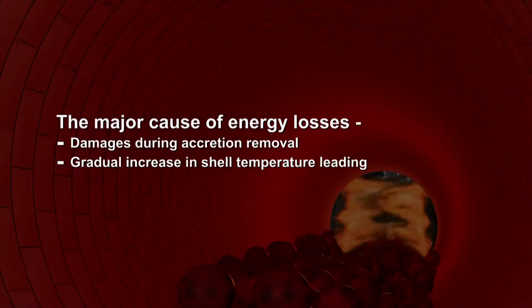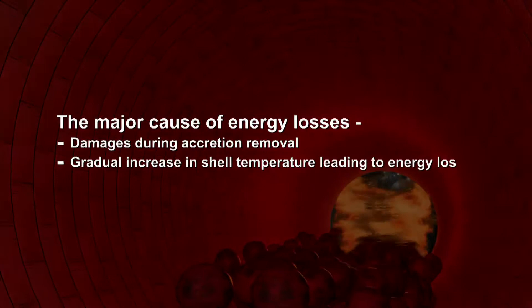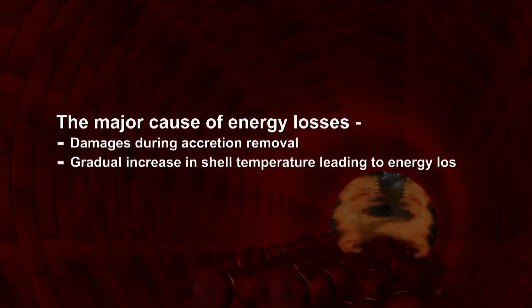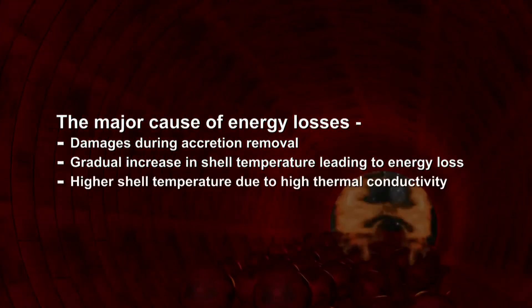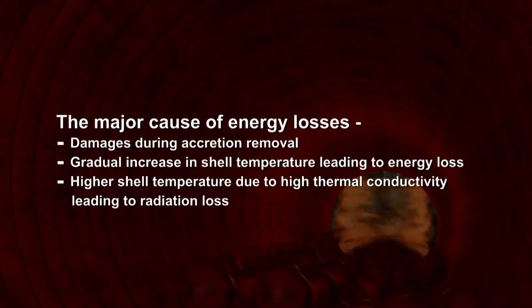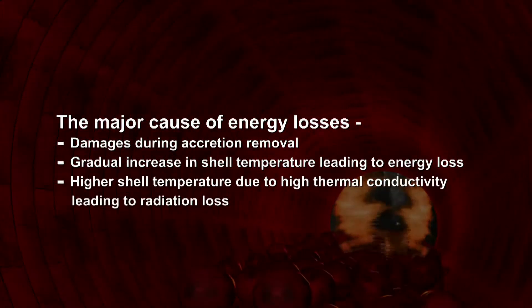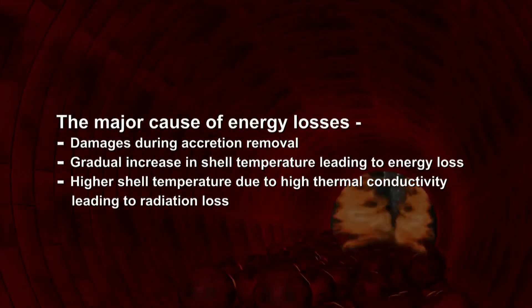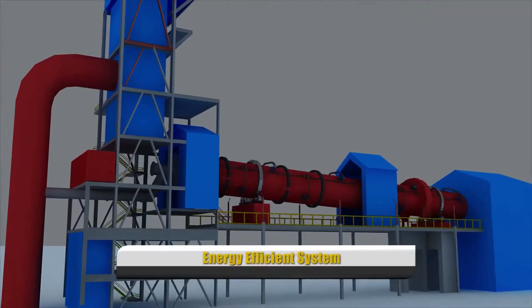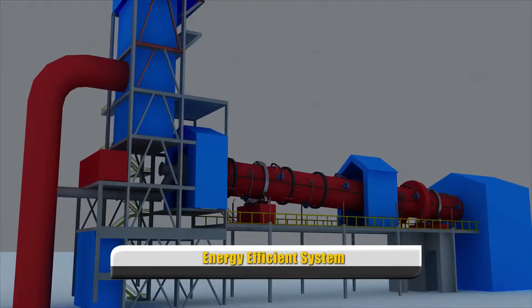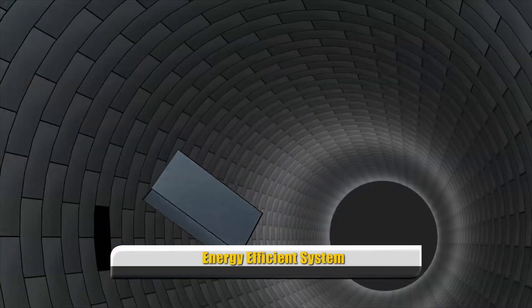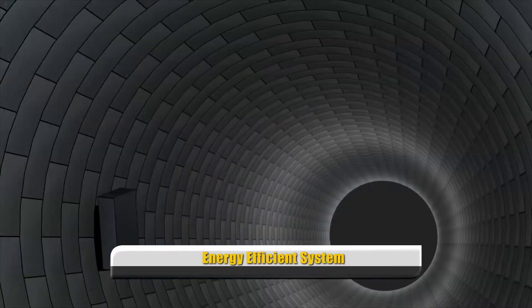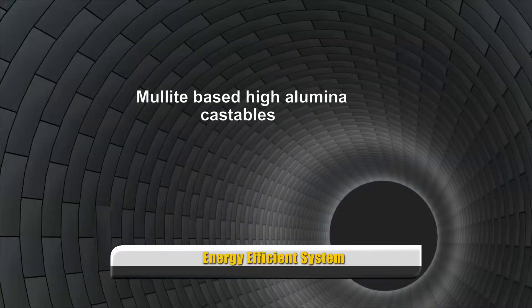gradual increase in shell temperature leading to energy loss, and higher shell temperature due to high thermal conductivity leading to radiation loss. The energy efficient replacement for high alumina low cement castables are mullite based high alumina castables.